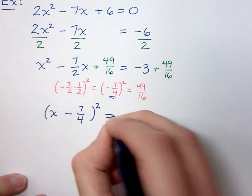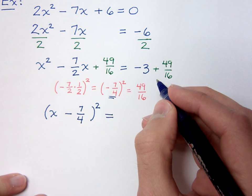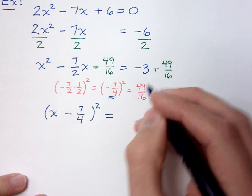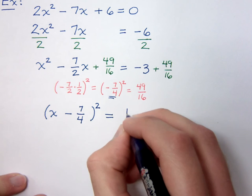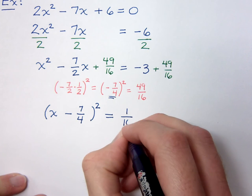On the right side, of course, you're just combining fractions. When you get your like denominator and add, you're going to come up with a positive 1 over 16.